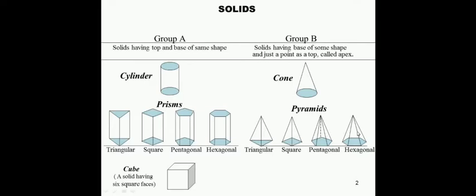Next is the hexagonal pyramid. The base is a regular hexagon, and there will be six vertical triangular faces which meet at a point called the apex. The next type of Group B solid is the tetrahedron. Tetra means four, so a tetrahedron is a solid having four triangular faces.